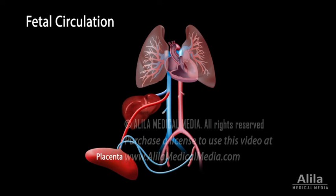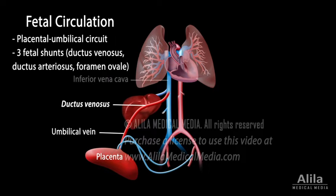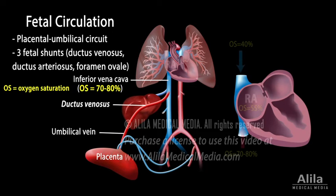Fetal circulation is markedly different from neonatal circulation due to the placental umbilical circuit and presence of three fetal shunts. The umbilical vein carries oxygen and nutrient-rich blood from the placenta to the liver. Because the fetal liver is not yet ready for its blood filtering function, most of the blood bypasses the liver via a shunt called the ductus venosus, which drains into the inferior vena cava. In the inferior vena cava, placental blood mixes with venous blood of the fetus and travels to the heart's right atrium. While the right heart normally pumps blood to the lungs after birth, this step is skipped in the fetus because the fetal lungs are not yet functional.